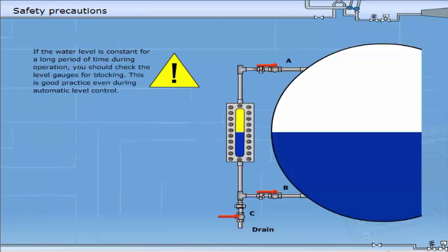If the water level is constant for a long period of time during operation, you should check the level gauges for blocking.